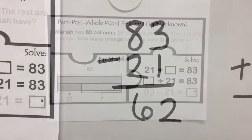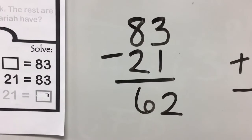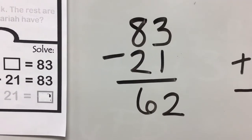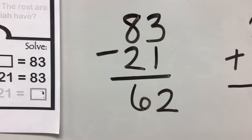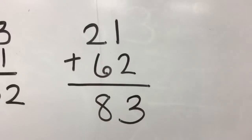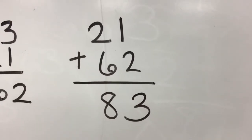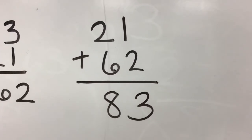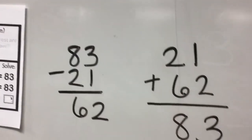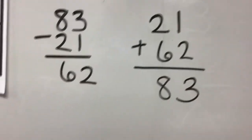My problem set up is an algorithm: 83 minus 21, and I can see that equals 62. So then I can move over here and say 21 plus 62 equals 83. That should be the same as my total, and it is, so it is correct.